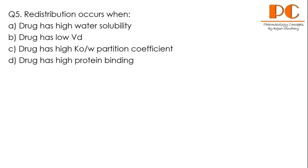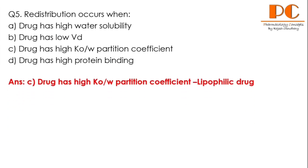Question number five: redistribution occurs when — Option A: drug has higher water solubility. Option B: drug has low volume of distribution. Option C: drug has high oil/water partition coefficient. Option D: drug has high protein binding.